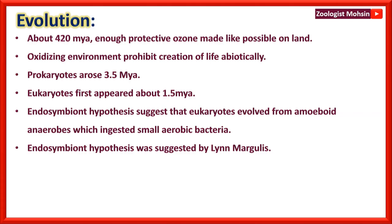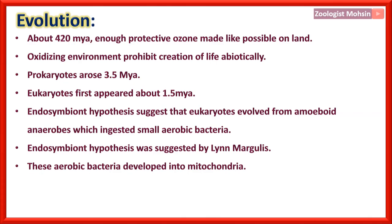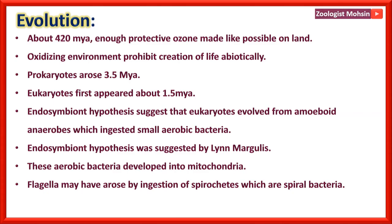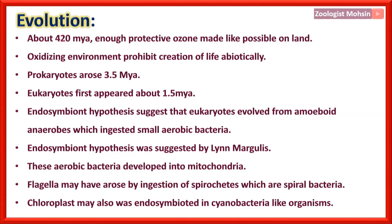These aerobic bacteria developed into mitochondria. Flagella may have arisen by ingestion of spirochetes, which are spiral bacteria. Chloroplasts may also have been endosymbionts in cyanobacteria-like organisms, not exactly cyanobacteria.